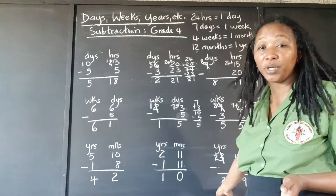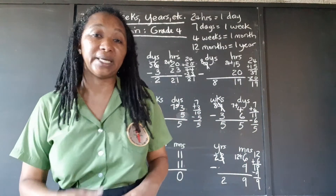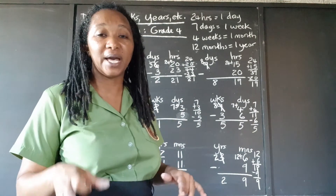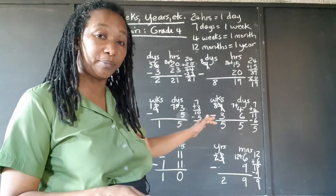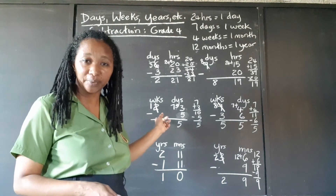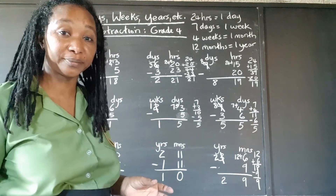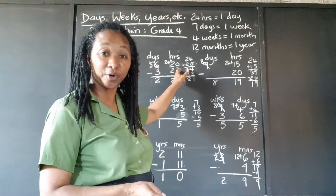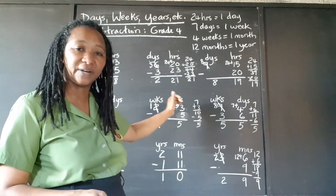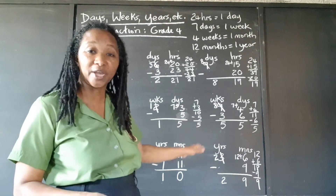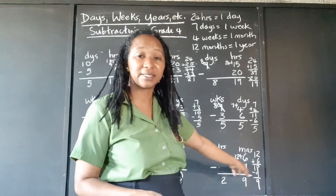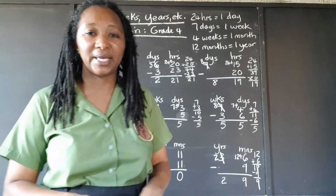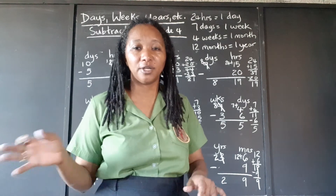So our final answer is 2 years and 9 months. The basic principle is: if we're subtracting — whether days to hours, weeks to days, or years to months — and the number at the bottom is bigger than the number at the top, we go over and get some help. Just remember: if it's days to hours, carry it over as 24. If it's weeks to days, carry it over as 7. If it's years to months, carry it over as 12. Add it to what was there already, then subtract. The rest is just easy — you already know your subtraction principles.